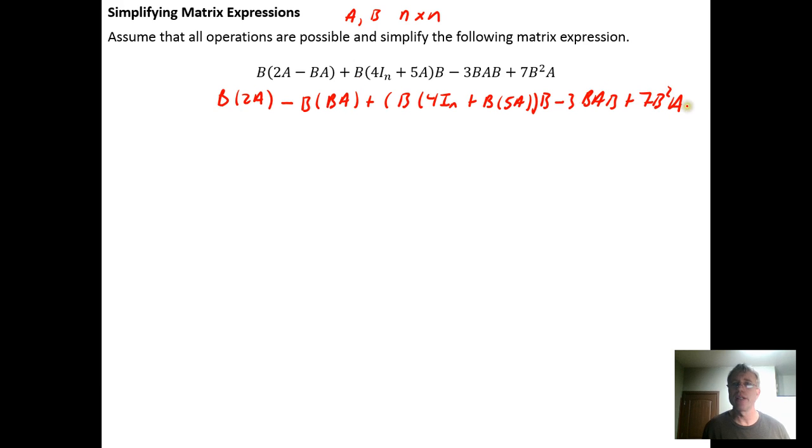And this is all still times this other B, and then we have minus 3BAB plus 7B²A. Here we want to notice that the 2 is a scalar, so the order of scalar multiplication doesn't matter. The 2 can be moved out front so that we get 2 times B times A. We want to remember that matrix multiplication isn't commutative, so we cannot rewrite BA as AB.